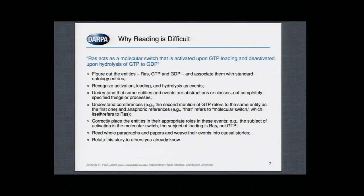Then, if you get that far, a system has to understand what are called co-references. Is this second mention of GTP the same thing as the first? You know it is, but how is a machine supposed to know that? Then, if you know what the entities are, you have to put them in their appropriate roles in events. You have to recognize that the subject of activation is the molecular switch, which itself refers to RAS. And you have to recognize that loading here is loading of GTP into RAS, not the loading of GTP alone.